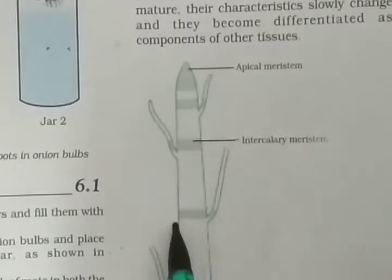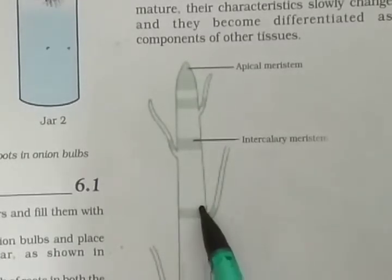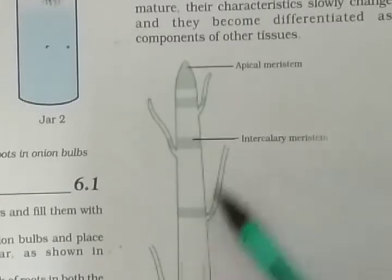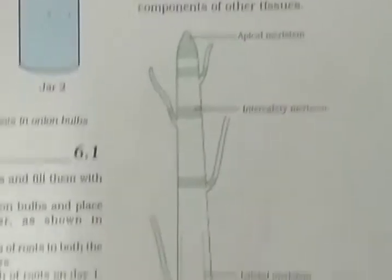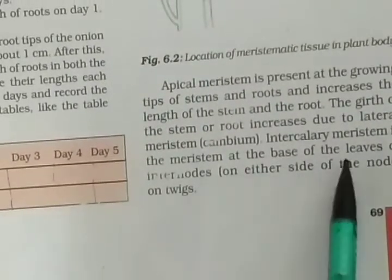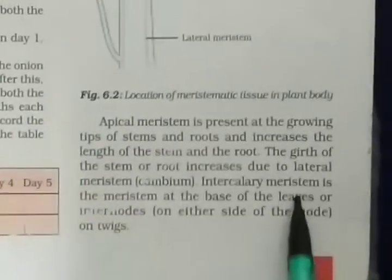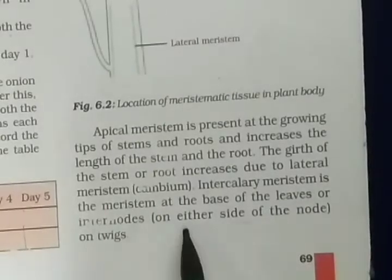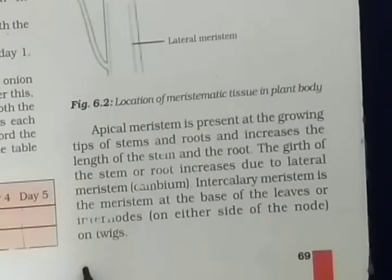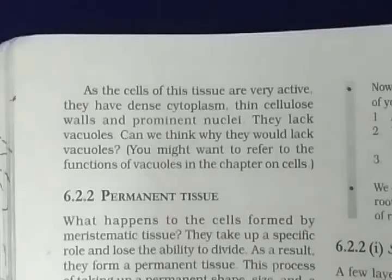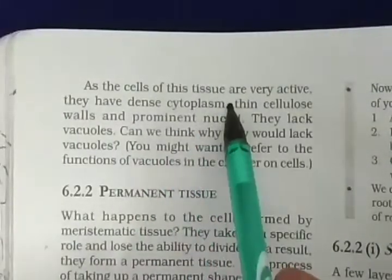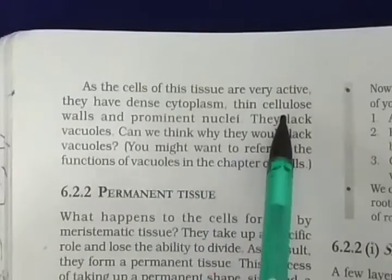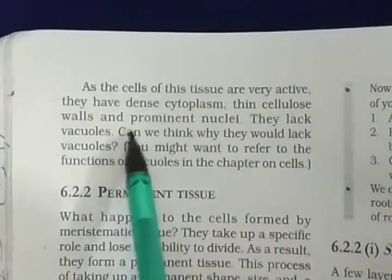The growth of sugarcane is an example of intercalary meristem. Intercalary meristem is the meristem at the base of the leaves or internodes, on either side of the node on twigs. The cells of this tissue are very active — they have dense cytoplasm, thin cellulose walls, and prominent nuclei.